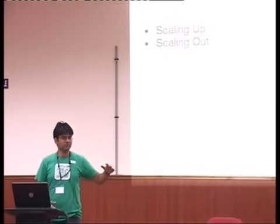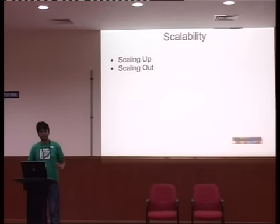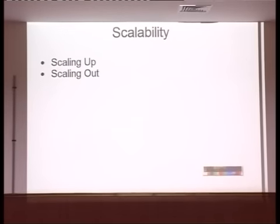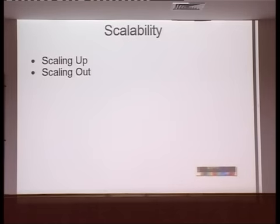An application should be able to scale up to like 10 million people — it shouldn't stop working or have server failures. This is one aspect of scalability. Scalability basically means your application should keep growing as your users keep growing. There are two things in scalability: scaling up and scaling out.